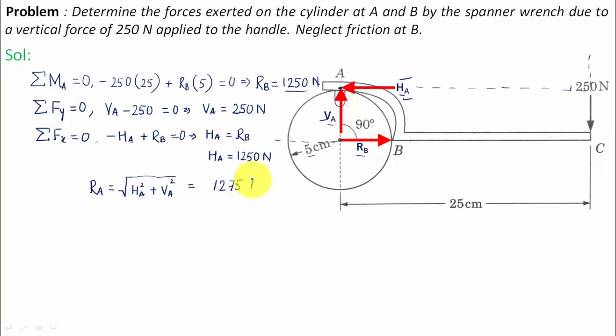One more thing you can do is calculate the angle that this resultant makes with the horizontal. This can be done pretty easily using the formula tan theta equals VA over HA.